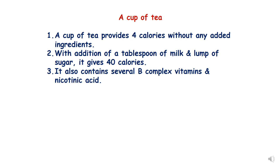A cup of tea provides four calories without any added ingredients. With the addition of a tablespoon of milk and a lump of sugar it gives 40 calories. Tea also contains several B-complex vitamins and nicotinic acid. You can refer to economic botany by Calder for more details on the history and other aspects of tea. Thank you, and we will meet in the next lecture.